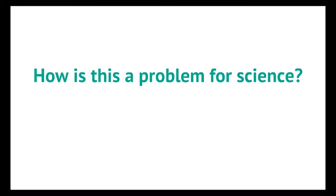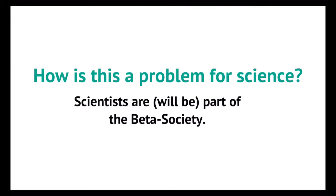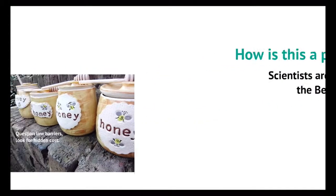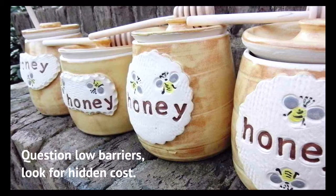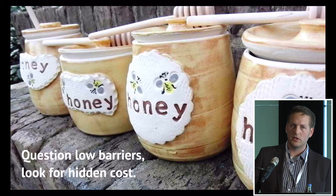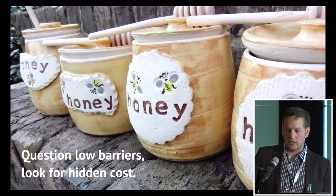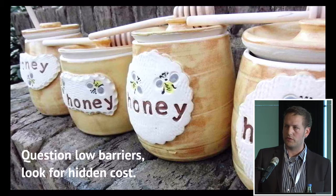You all now wonder: how is this a problem for science? The simple answer is scientists are and will be part of the beta society simply because they are using all these tools — and, as we all believe, they will do so even more in the future. What we should do is question these low barriers and look for the hidden costs of these services.